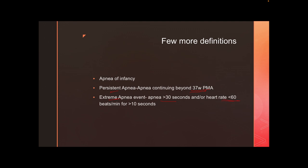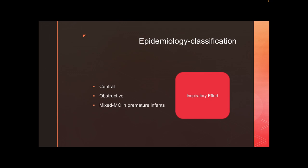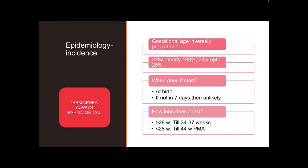An extreme apnea event is where there is prolonged apnea or the heart rate dips to less than 60 for more than 10 seconds. The classification of apnea types is based on the presence or absence of inspiratory effort. In central apnea there is no inspiratory effort; in obstructive there is inspiratory effort but no airflow. Mixed apnea is the most common variety.